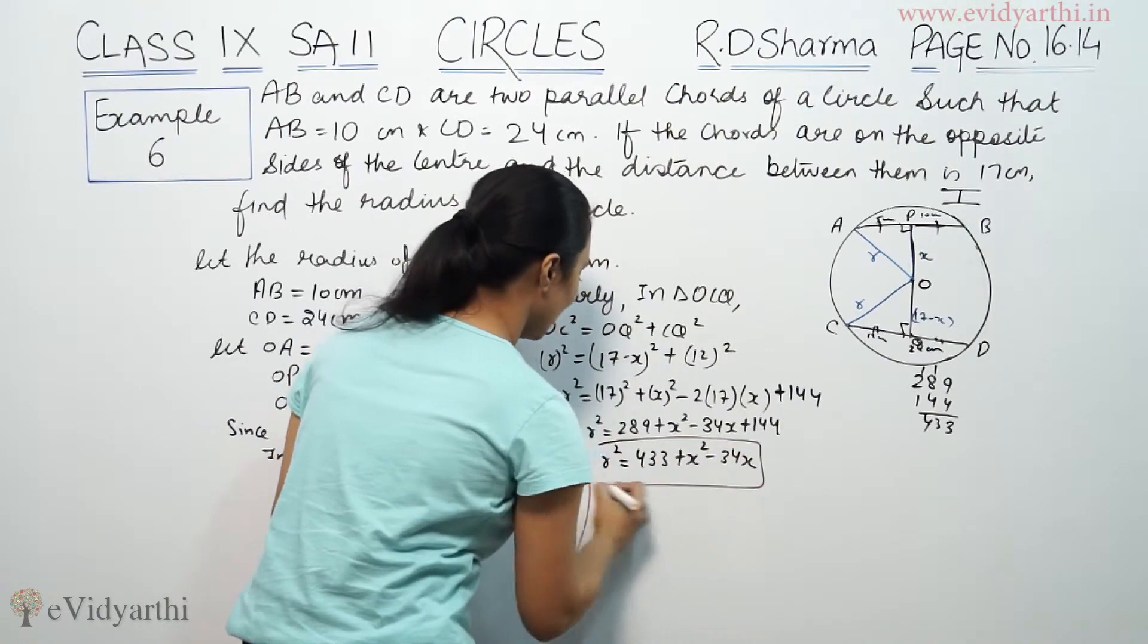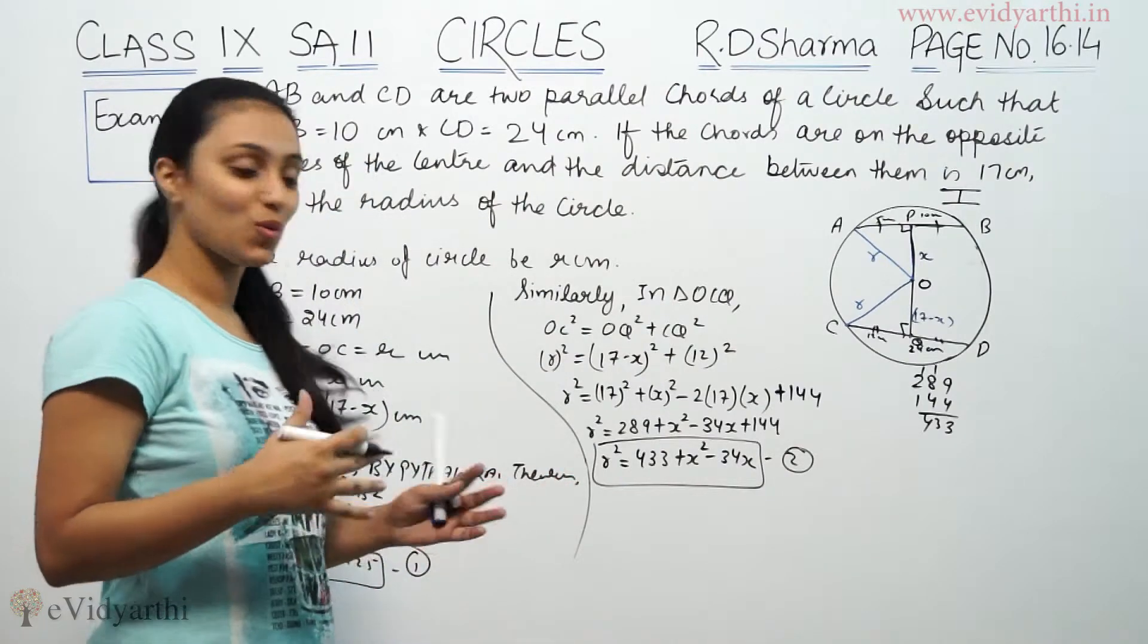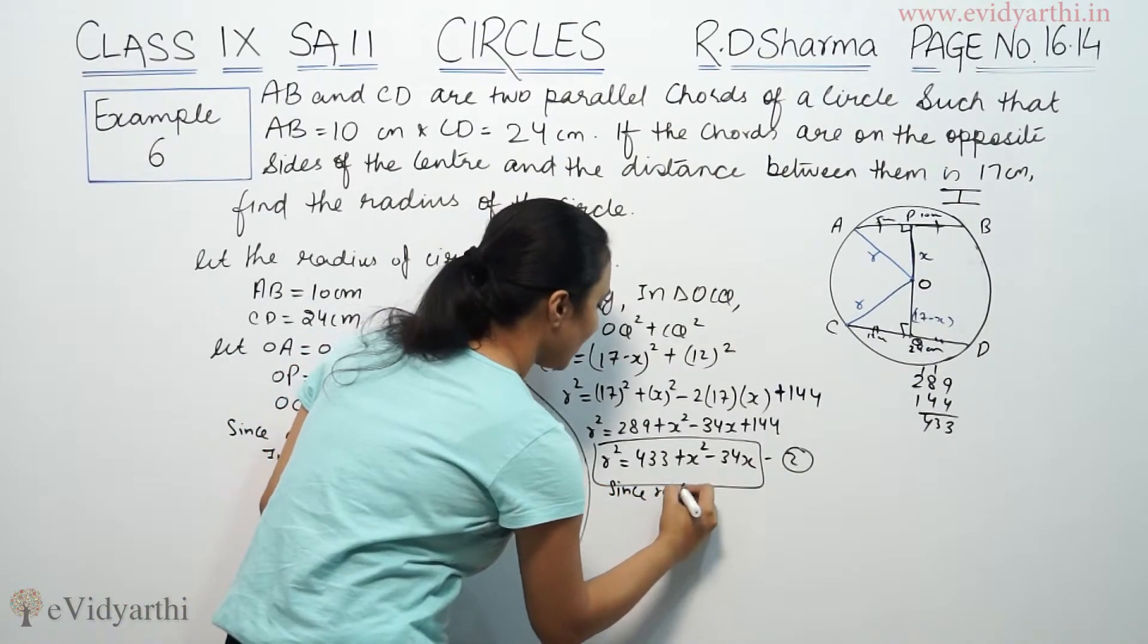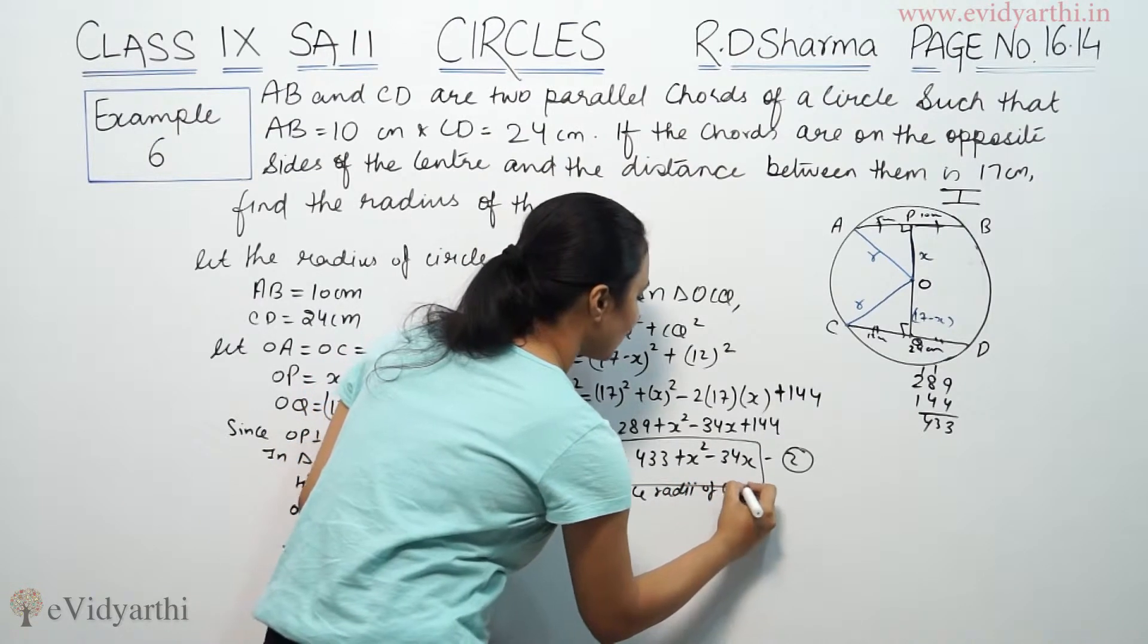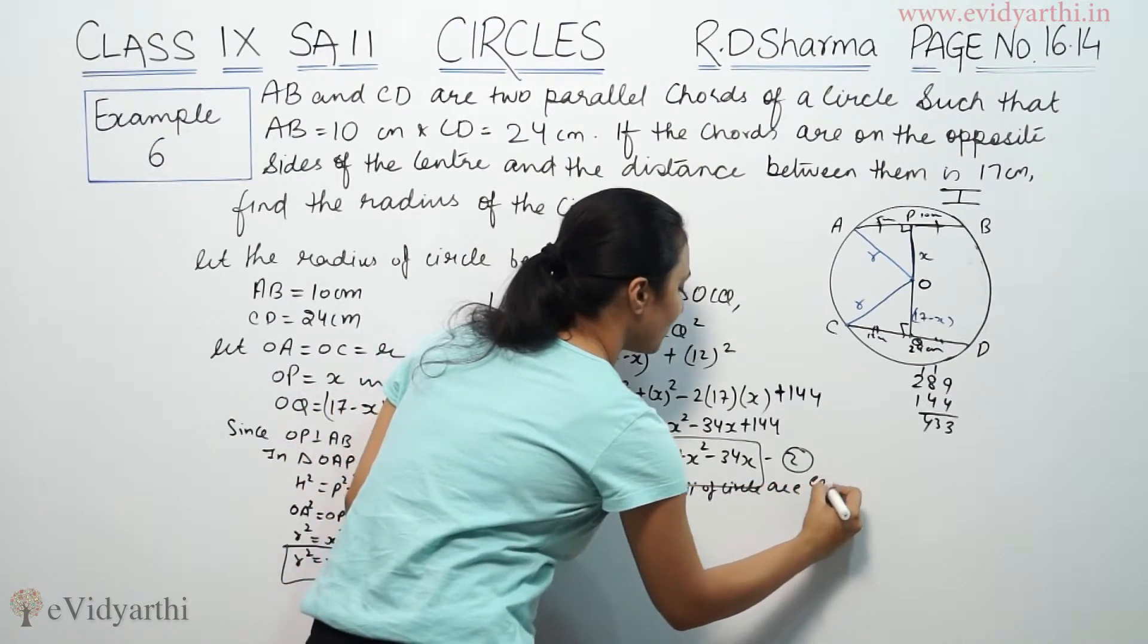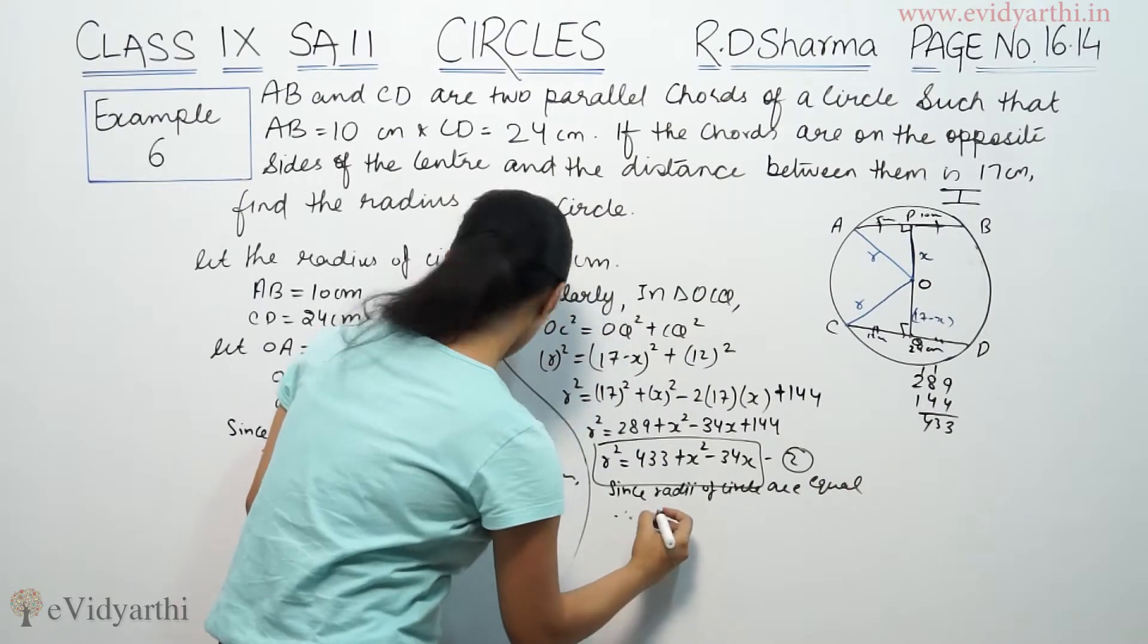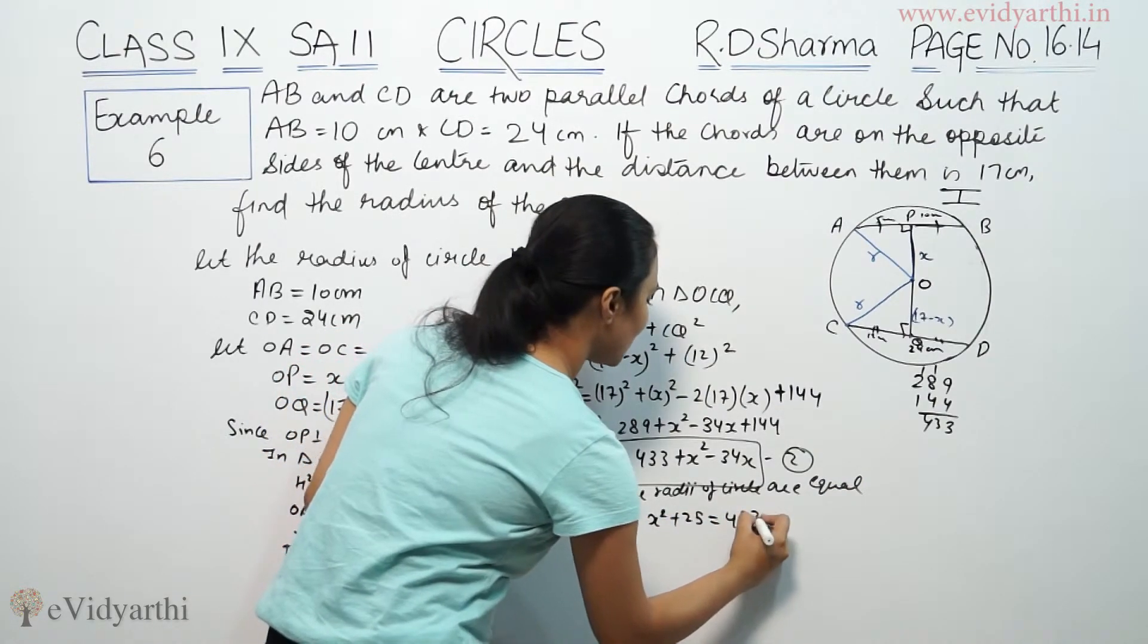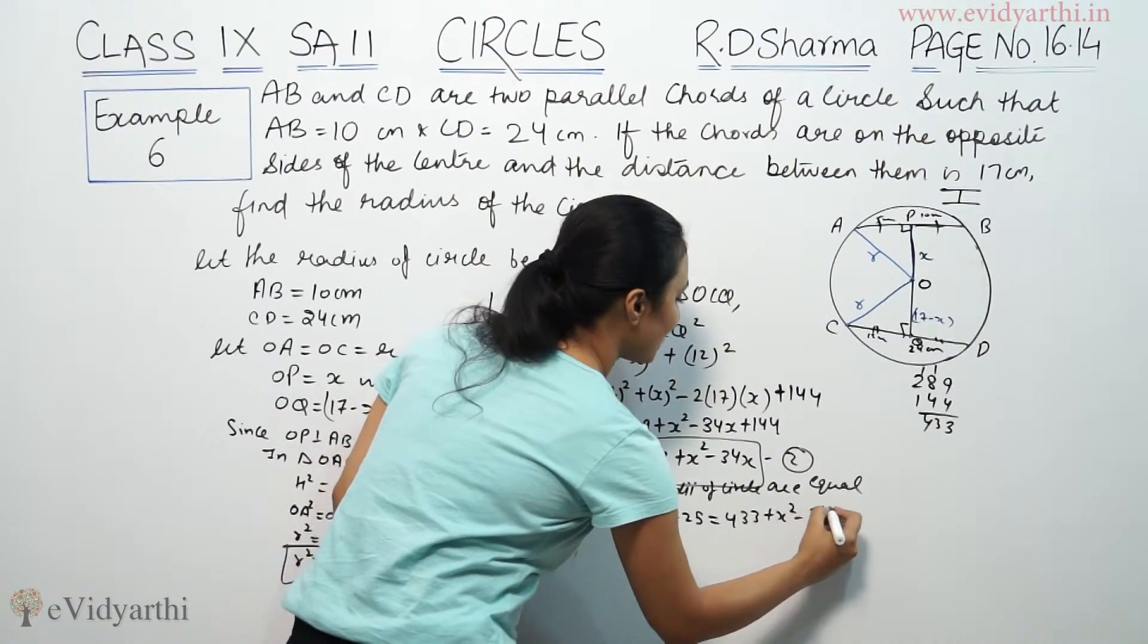So this is also the radius. So radii of circle are equal. Therefore x square plus 25 will be equal to 433 plus x square minus 34x.